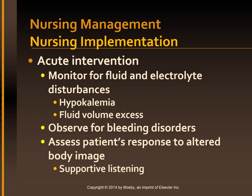Monitor for fluid and electrolyte imbalances. When the patient is taking diuretics, monitor serum levels of sodium, potassium, chloride, and bicarbonate. Monitor renal function — BUN and serum creatinine — routinely and with any change in diuretic dosage. Observe for signs of fluid and electrolyte imbalance, especially hypokalemia. Hypokalemia may be manifested by cardiac dysrhythmias, hypotension, tachycardia, and generalized muscle weakness.